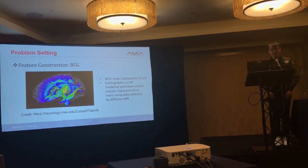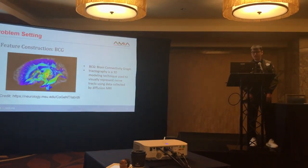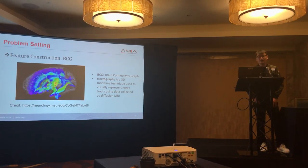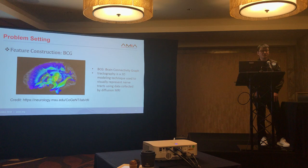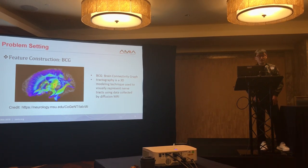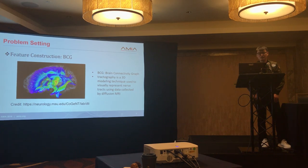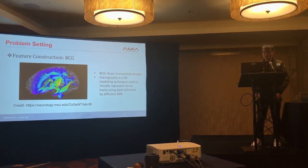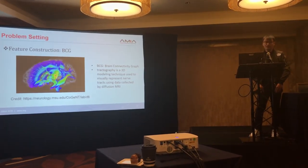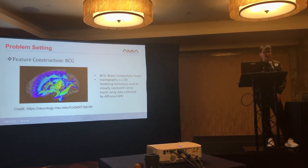After BGG construction, we also use the DTI image data to construct another graph called the Brain Connectivity Graph, or BCG. DTI image data encodes the connectivity information between pairwise regions of interest in the brain. Each acquisition can have a different BCG using a different type of tractography algorithm. Tractography is a 3D modeling technique used to visually represent nerve tracts using data collected by diffusion MRI.